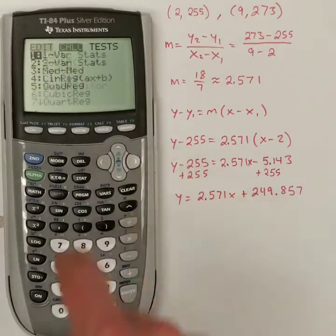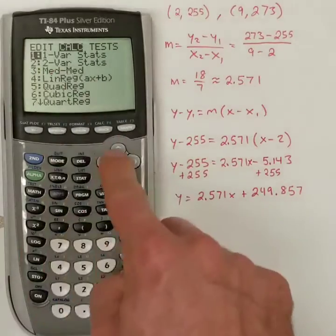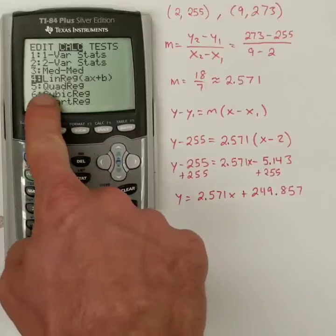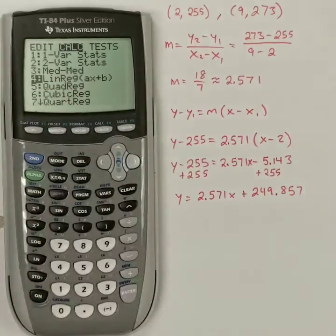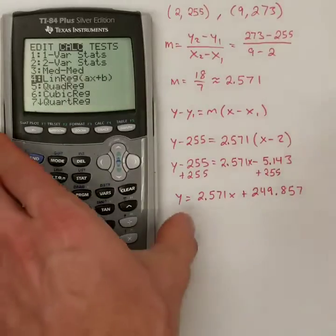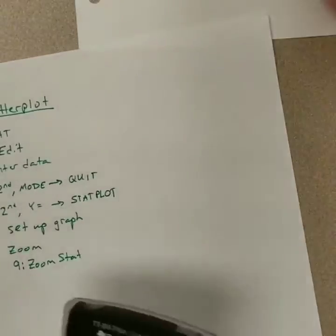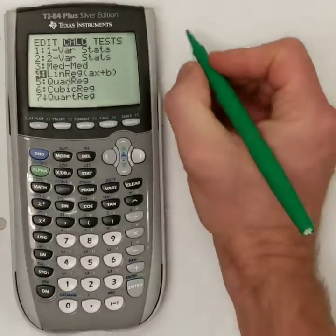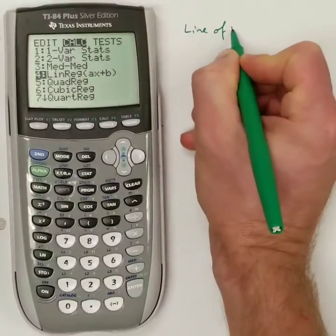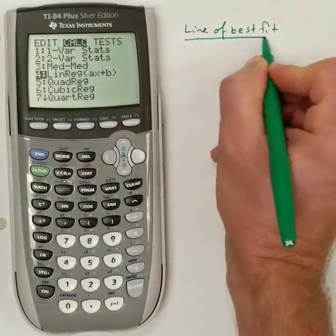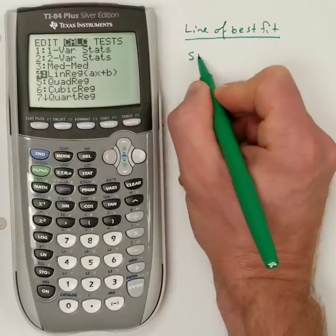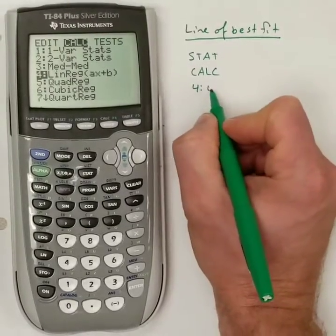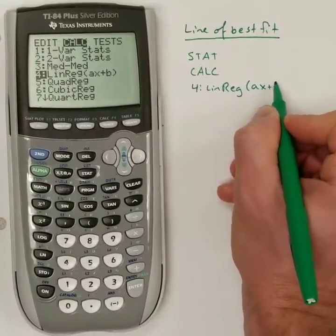Then go over to calculate. So, under the stat button, there's three menus. There's edit, calculate, and the test. I'm going to go to the calculate menu. And then down to the fourth option, which is linreg ax plus b. Before I continue with that, let me write some of that down here on this other sheet where I was putting the instructions. So, this is for the line of best fit. Again, you're going to hit stat, then calculate. Then the fourth option down is linreg ax plus b. That's the one you want.